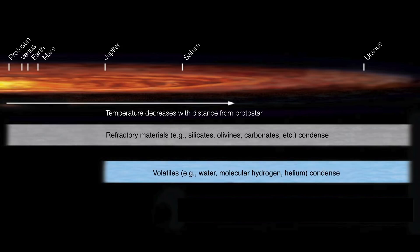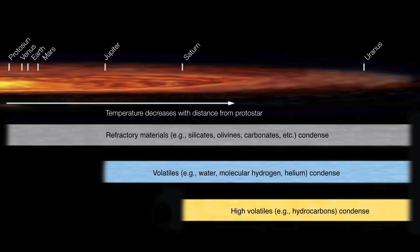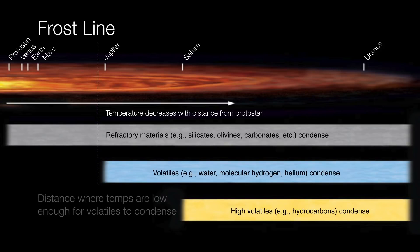Once you get out past the orbit of Saturn, temperatures are low enough to even allow high volatiles such as hydrocarbons, methane, ammonia, and so forth to condense. The point where temperatures drop low enough is called the frost line. It's the distance where temperatures are low enough for volatiles to condense.